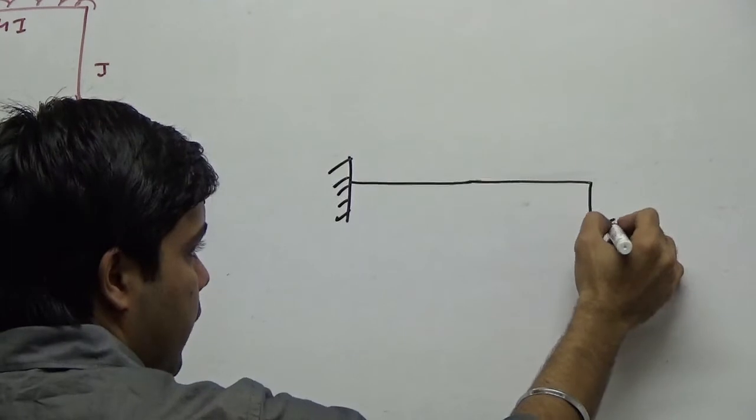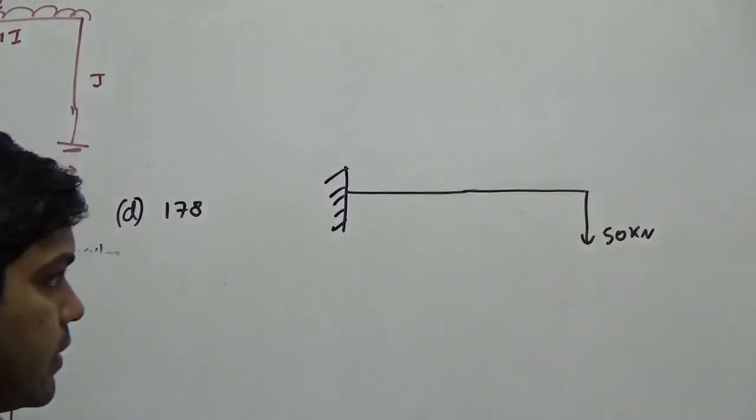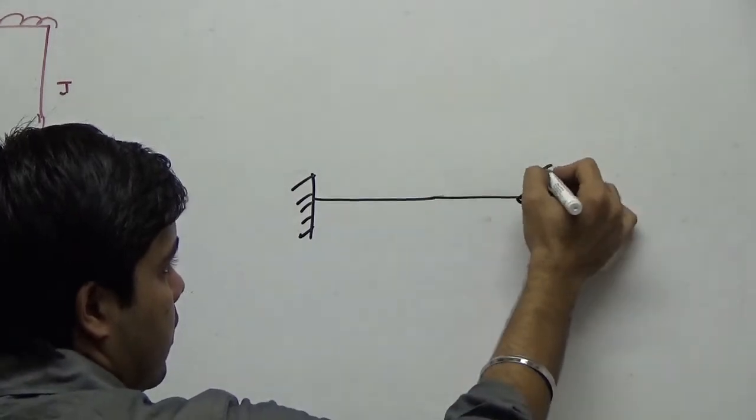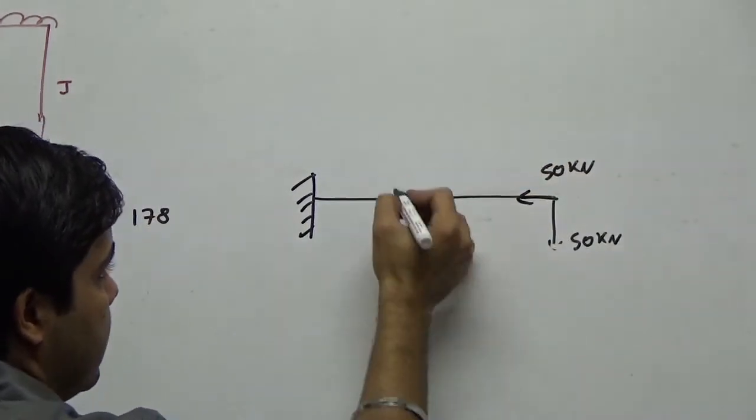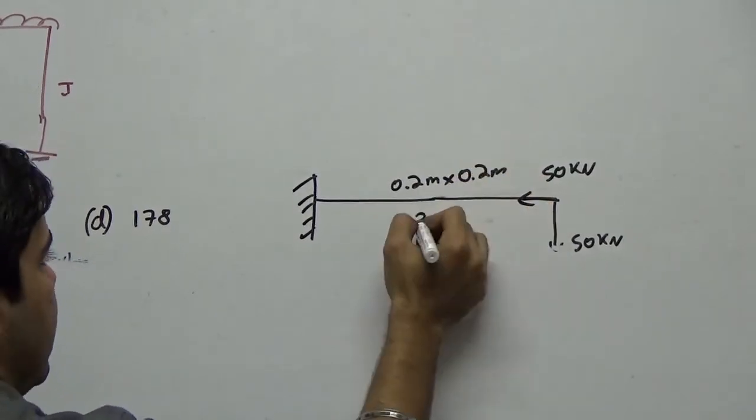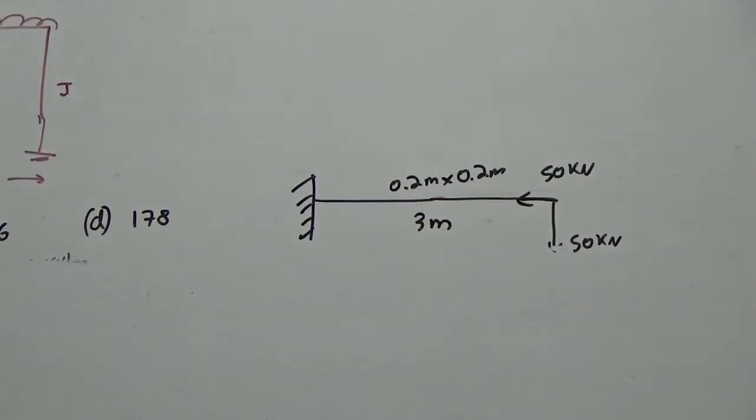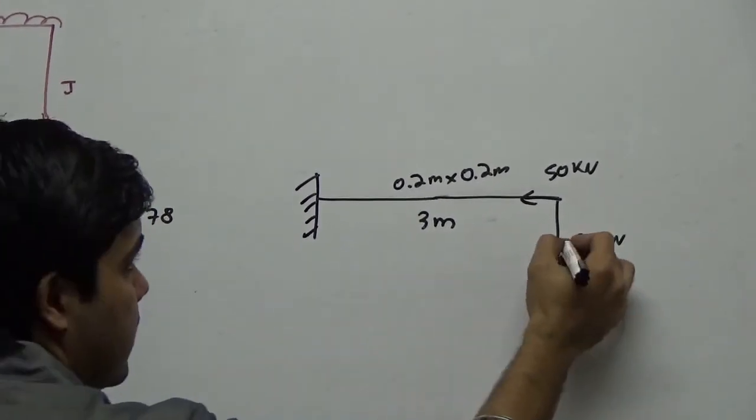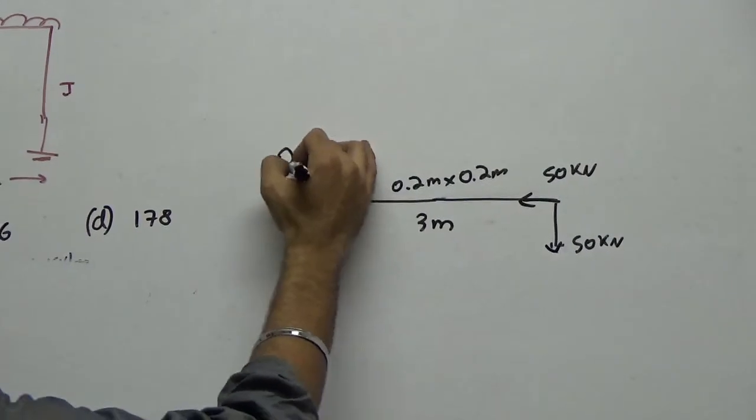This is your problem. You have a hanging load of 50 kN. If this is hanging, this is transferring the load here - 50 kN. And this is your 0.2 meter by 0.2 meter of beam having a span of 3 meter. Now if this is your problem, you can simply tell. First, let us go step by step. We need everything at point Q.